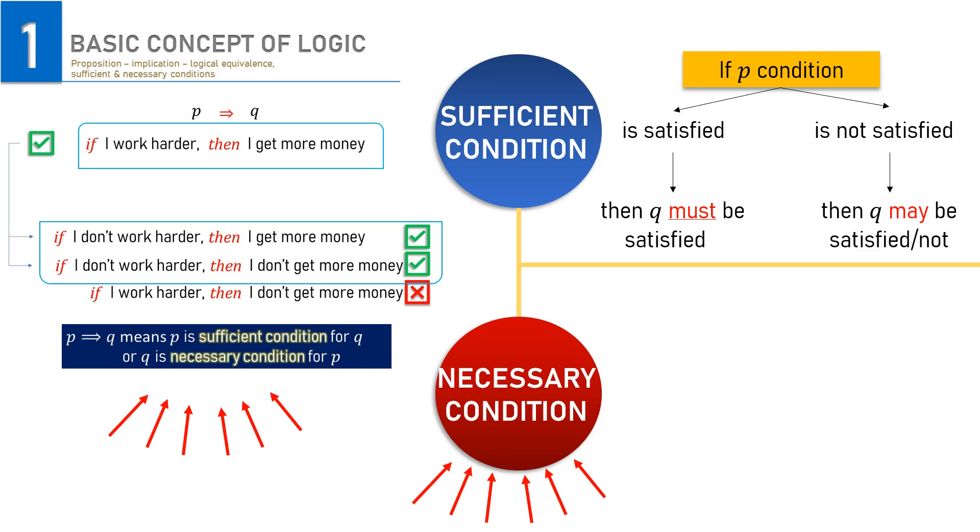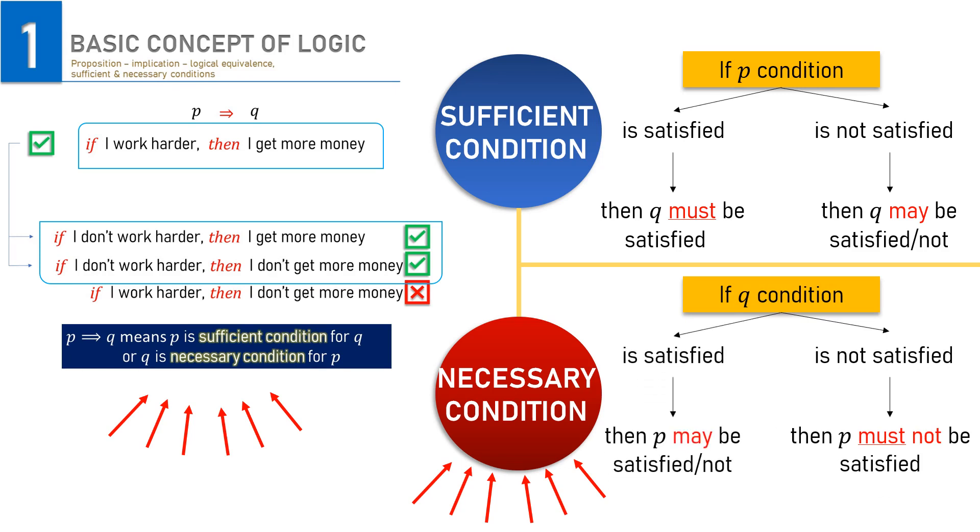So, here, Q as a necessary condition means the same. When Q is not satisfied, P must not be satisfied either. But when Q is satisfied, P may or may not be satisfied.